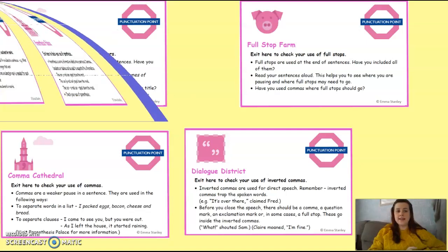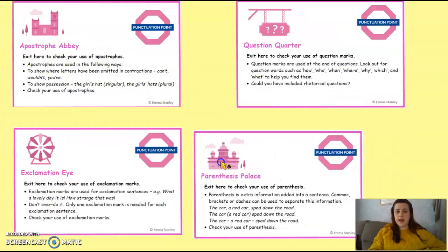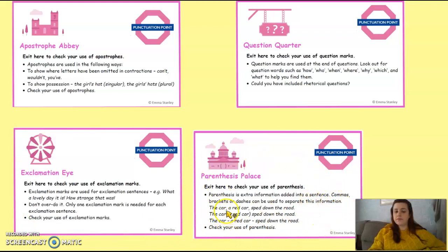Next we're going to look at apostrophes — apostrophes for possession and for contractions. Check that if there's a question being asked you've put a question mark, and if there's an exclamation sentence you've put an exclamation mark on the end. Parenthesis is a fancy word for the punctuation in embedded clauses — if you've used an embedded clause, have you put punctuation on either side, whether it's commas, dashes, or brackets? Read through the bullet points on screen because they tell you how to use them if you're unsure. Pause the video and check those four things in your writing.